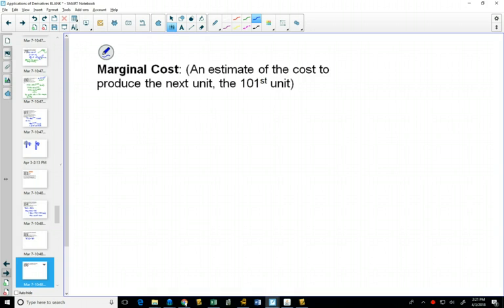Marginal cost. This is now estimating how much is it going to cost to produce, if you've already produced 100, and you want to produce one more. How much more is it going to cost to produce that next one?